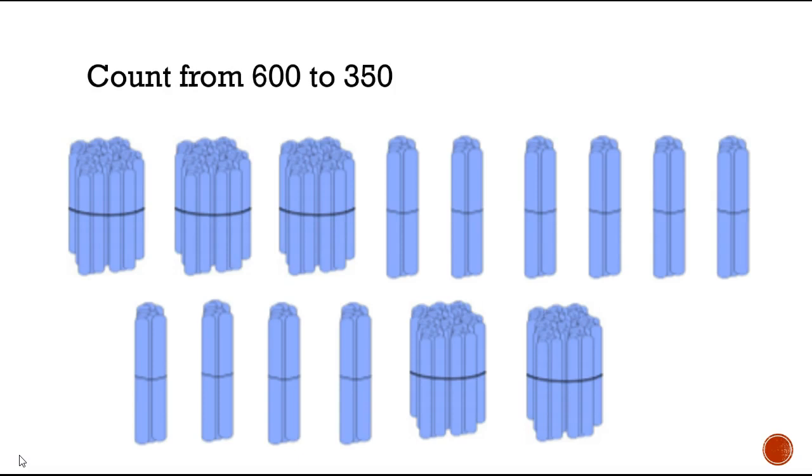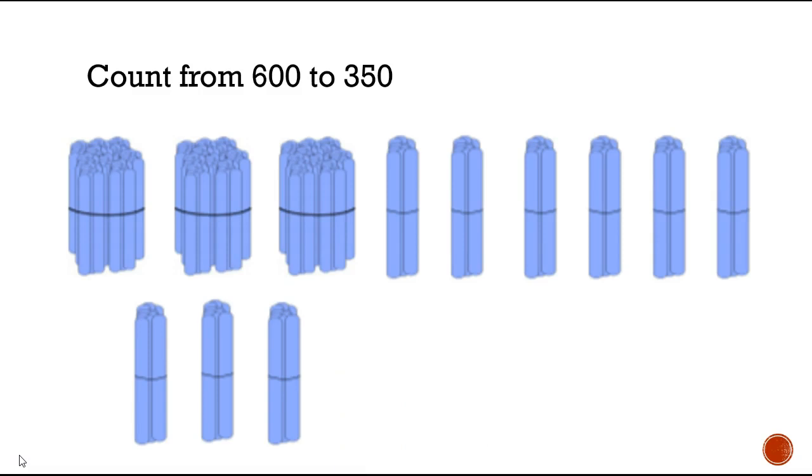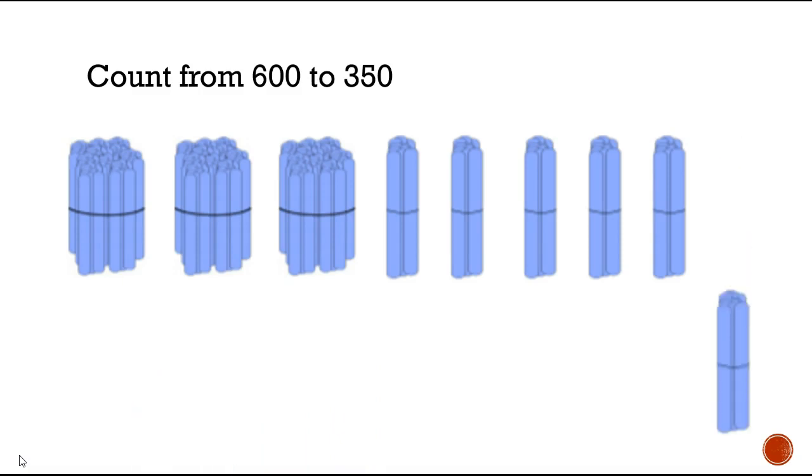Okay now we need to count backwards from 600 to 350: 600, 500, 400, 390, 380, 370, 360, 350. Oh that's kind of tricky.